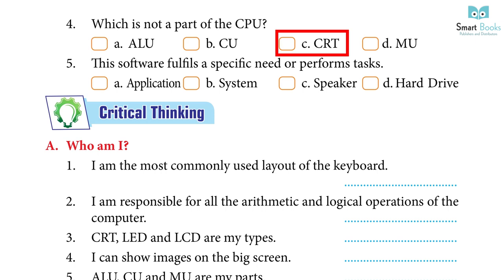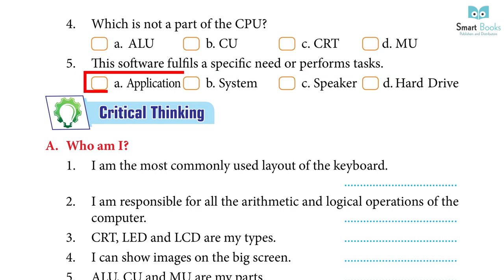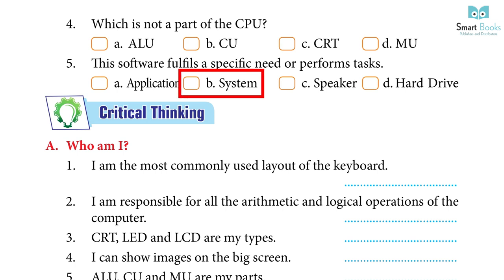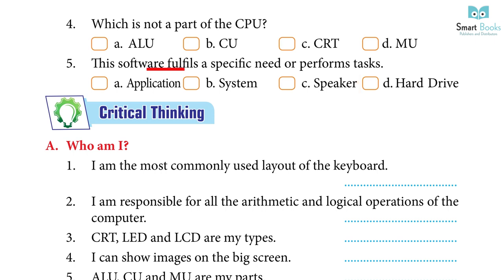5. This software fulfills a specific need or performs tasks. A. Application, B. System, C. Hard drive. Answer: A. Application.